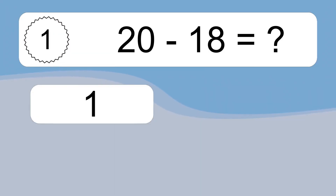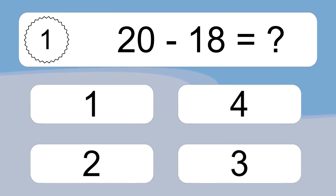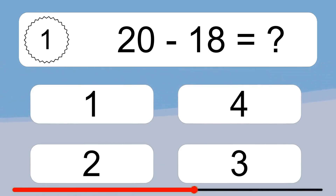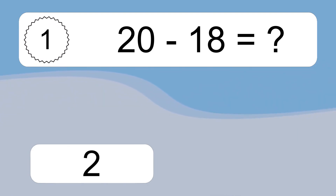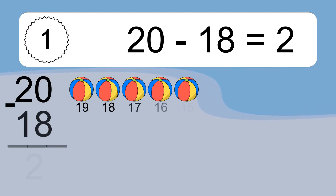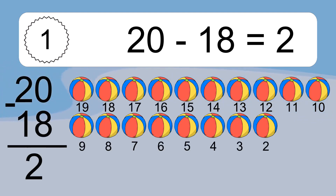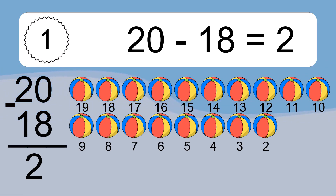20 minus 18 equals what? 20 minus 18 equals 2. Let's count it: 19, 18, 17, 16, 15, 14, 13, 12, 11, 10, 9, 8...